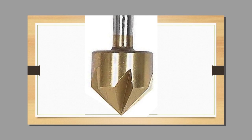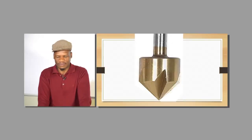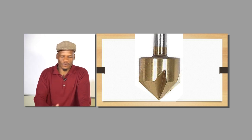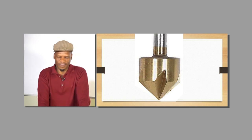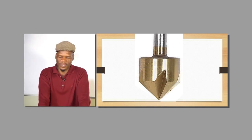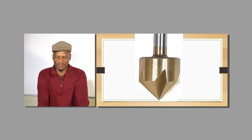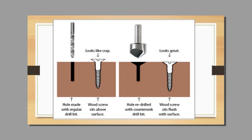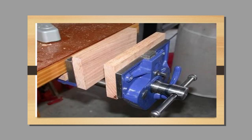You have got your countersink, which is a tool used to ensure that when you put a screw into a material like timber, the screw doesn't stick out above the surface. When you use the countersink, the screw sits nicely and flat into the surface. Without a countersink, your screw will stick out; with it, the screw sits flat into the surface.